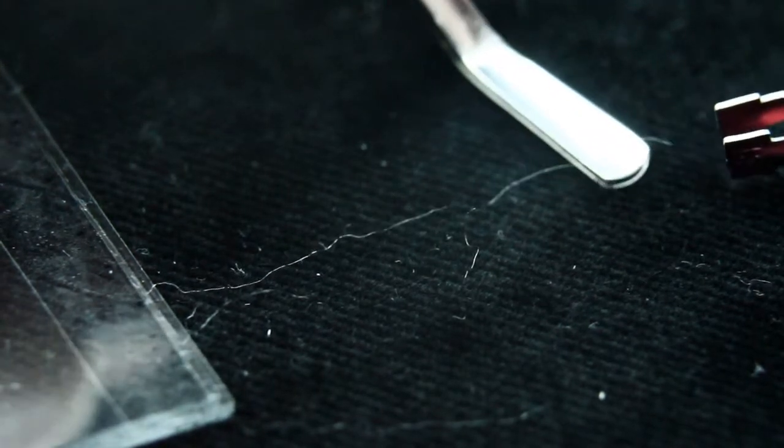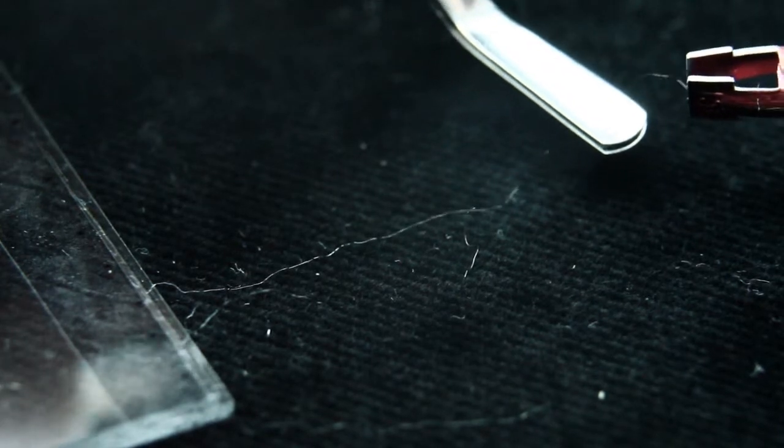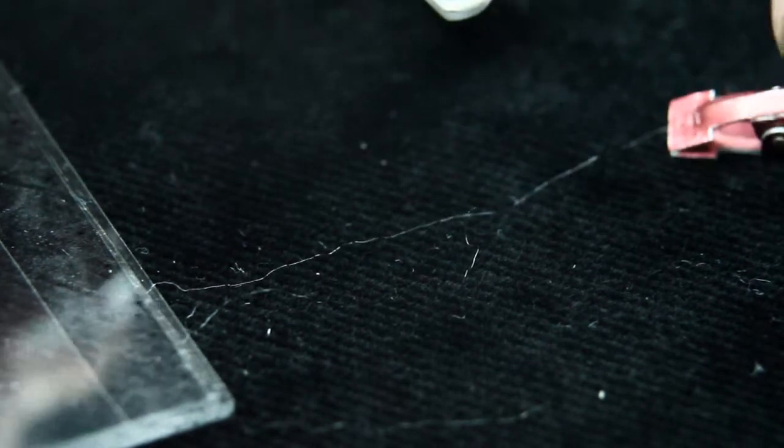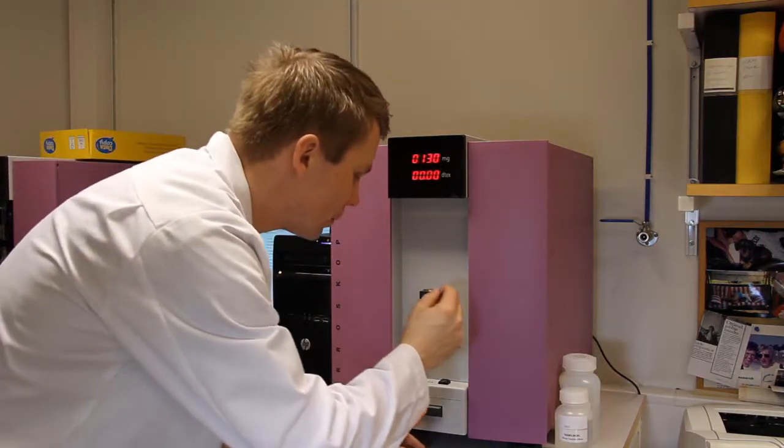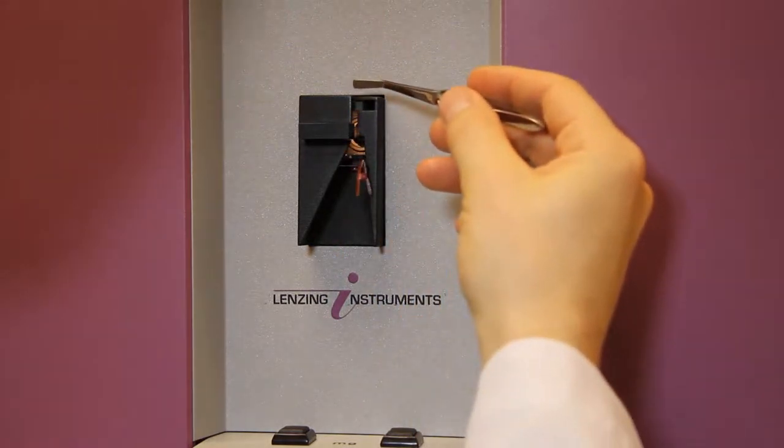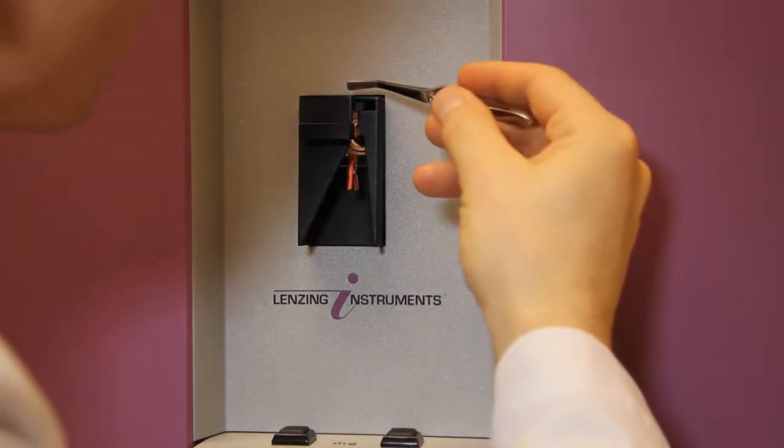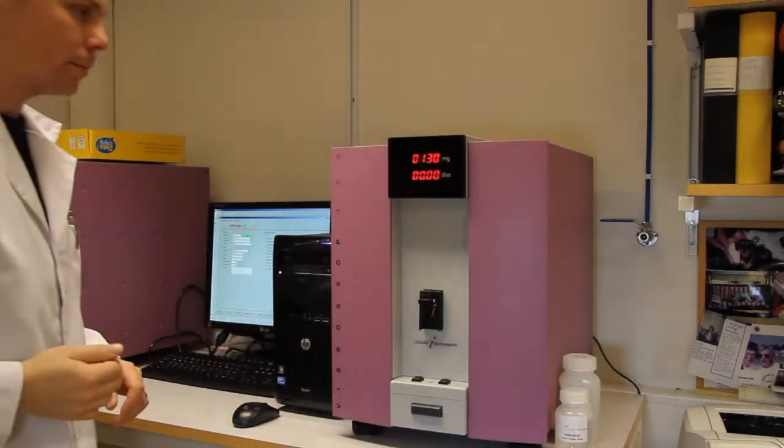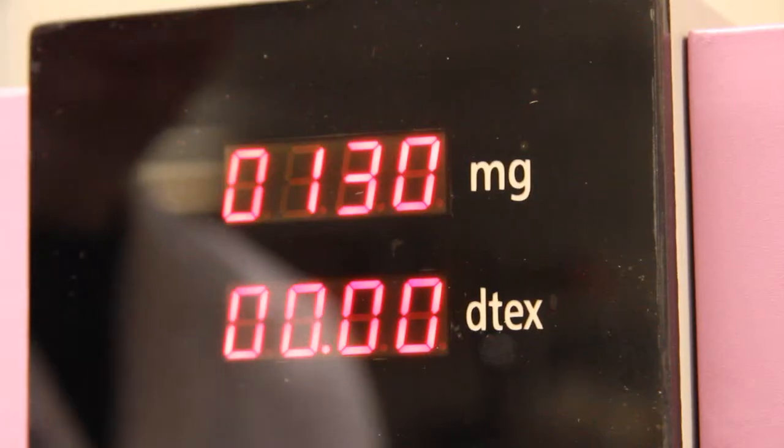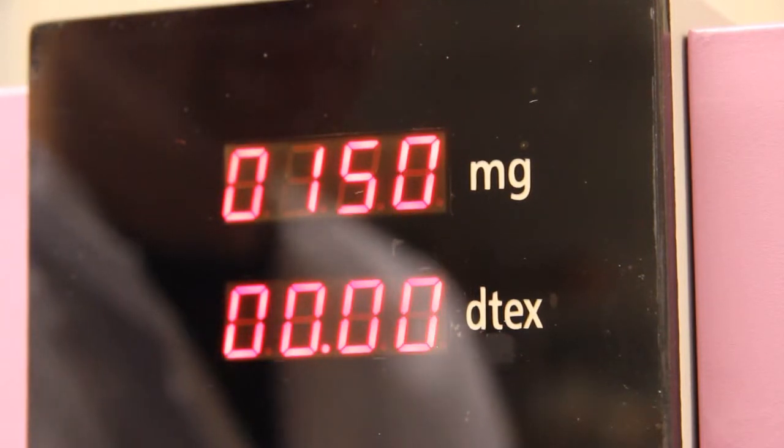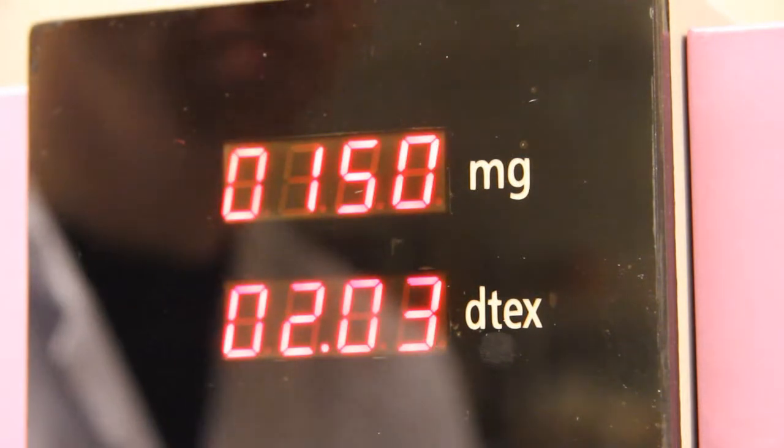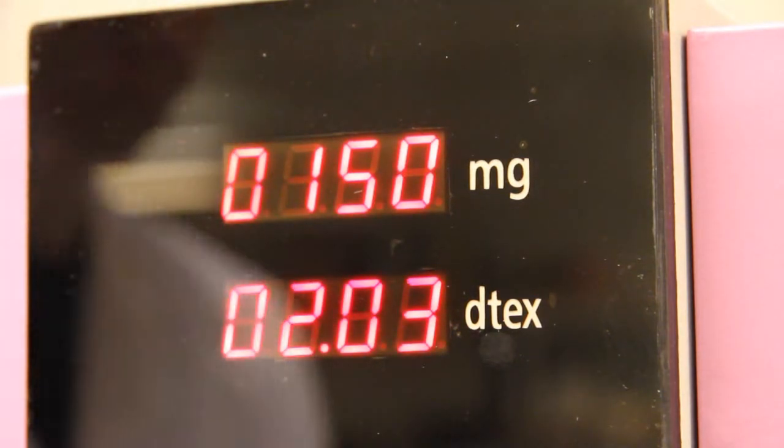We first measure titer or linear density. This is just mass per length of fiber. We then take out one fiber, staple or filament, from the sample which has been conditioned for a certain time and attach a pretension weight before we do the actual measurement. The individual fiber is subjected to vibrations at resonance frequency, and the linear density is determined from the conditions of the resonance state. The titer here is 2.03 decitex.